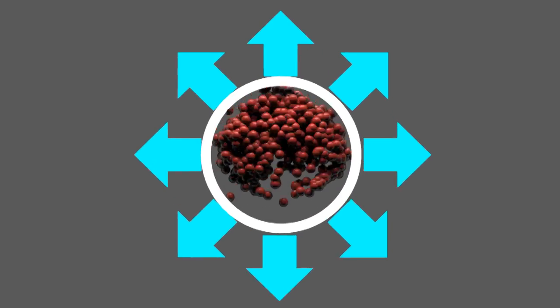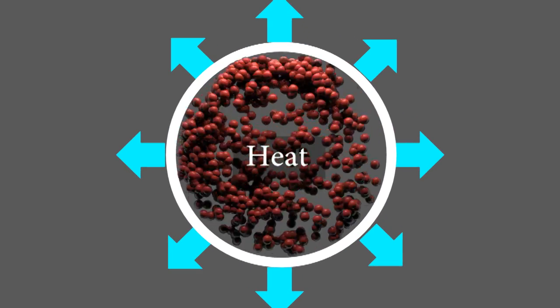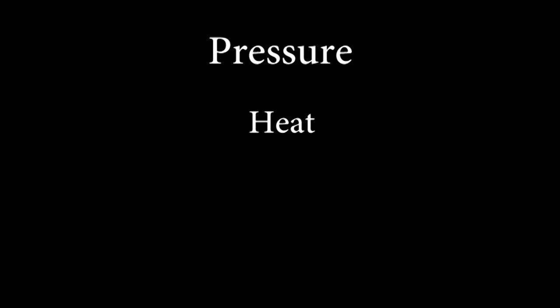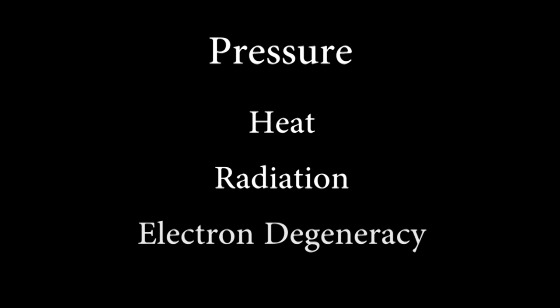Next, we need to talk about pressure. I have talked about how pressure comes from heat, based on the ideal gas law. But heat is just one of several things that produce pressure. Pressure can also come from radiation and something called electron degeneracy.